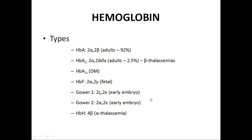In hemoglobin H, there are excess beta chains that combine with each other to form HbH, and there is reduced alpha chains. So it is present in alpha thalassemia.